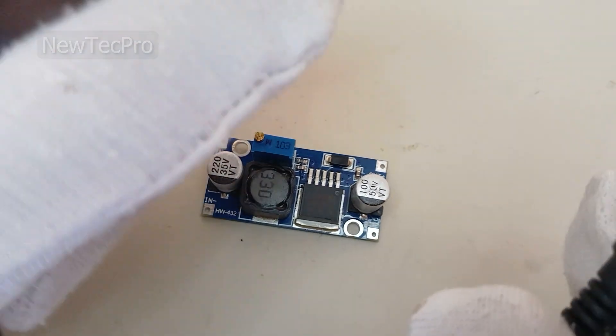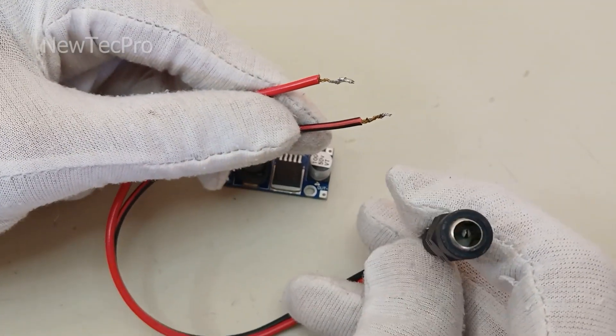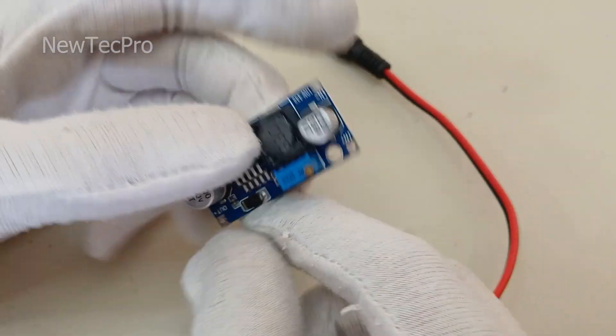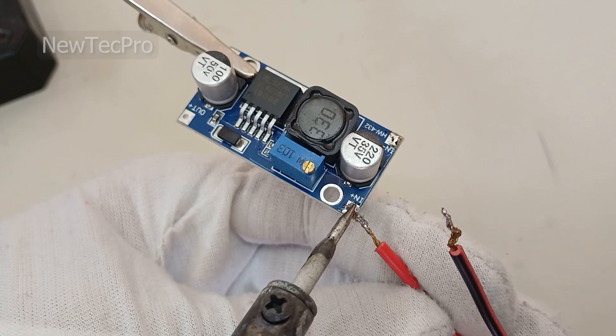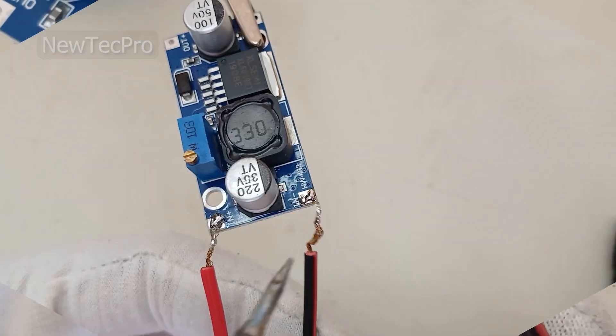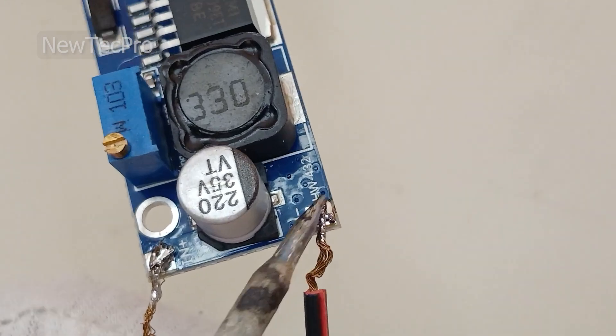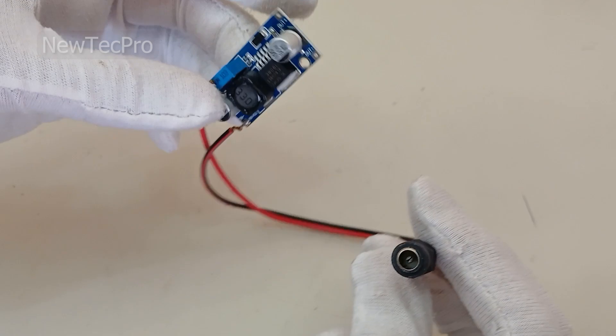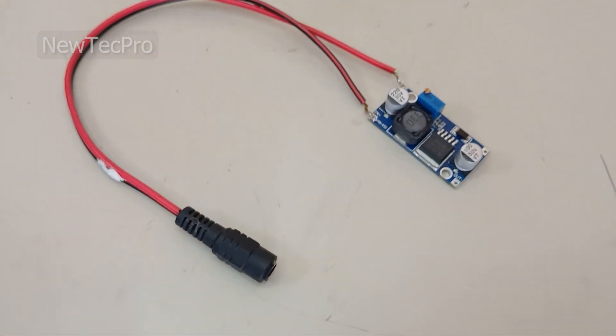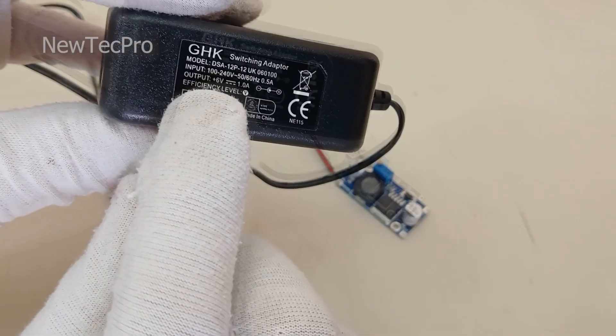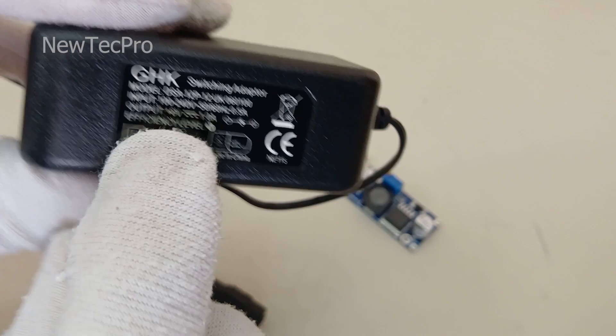First, for input, we use this plug wire. The red wire is input positive and the black wire is input negative. Okay, my friends, this is the input voltage. For example, I'm using a 6-volt AC/DC adapter.